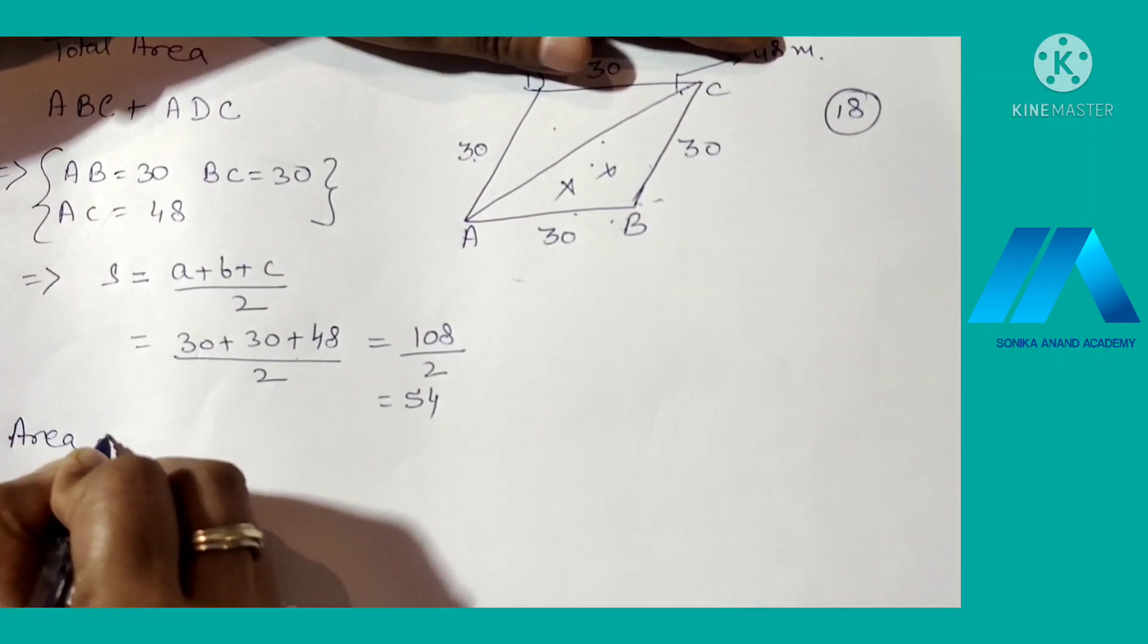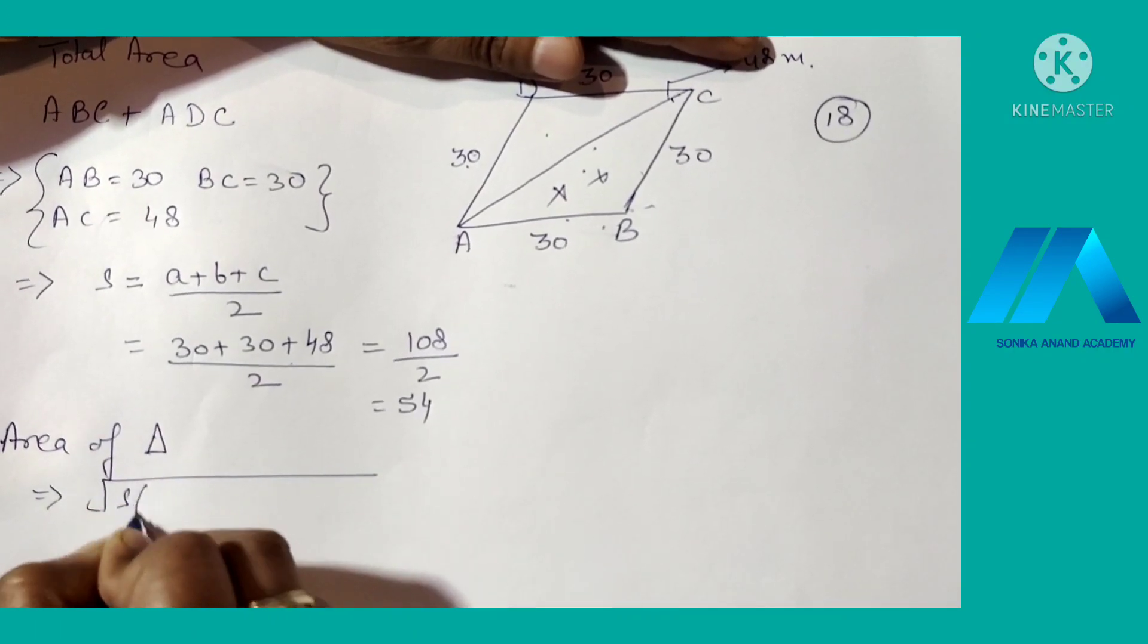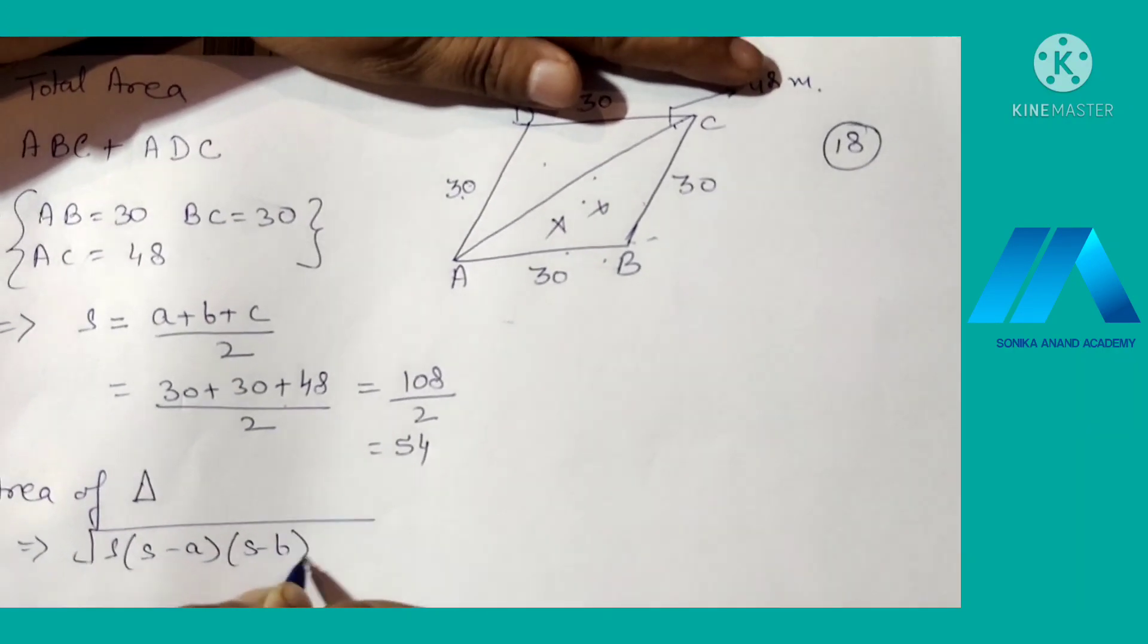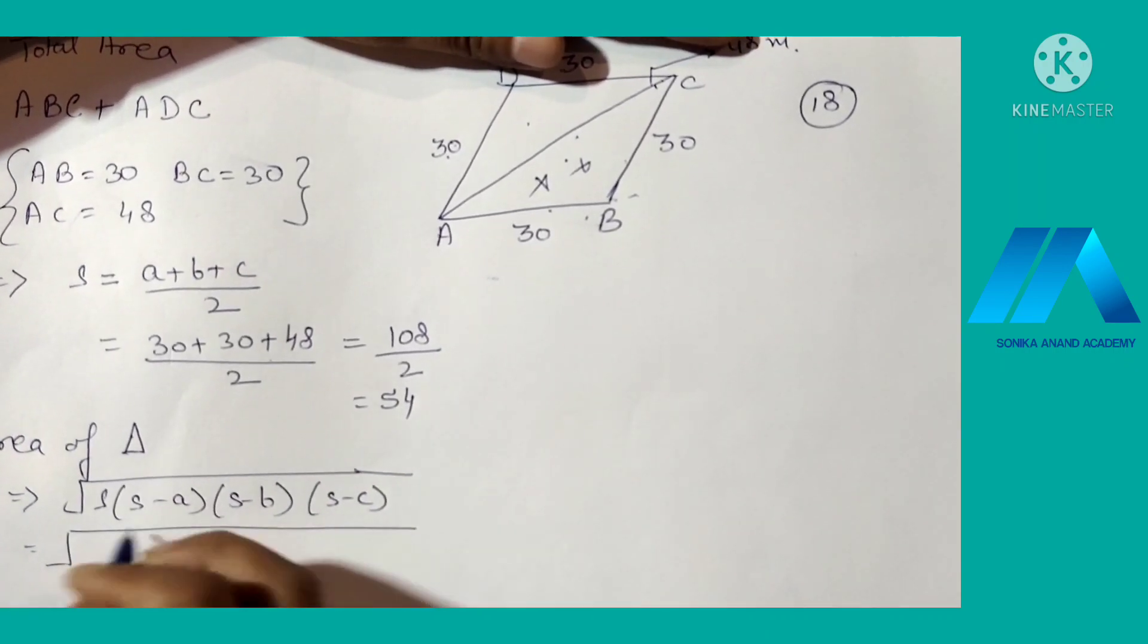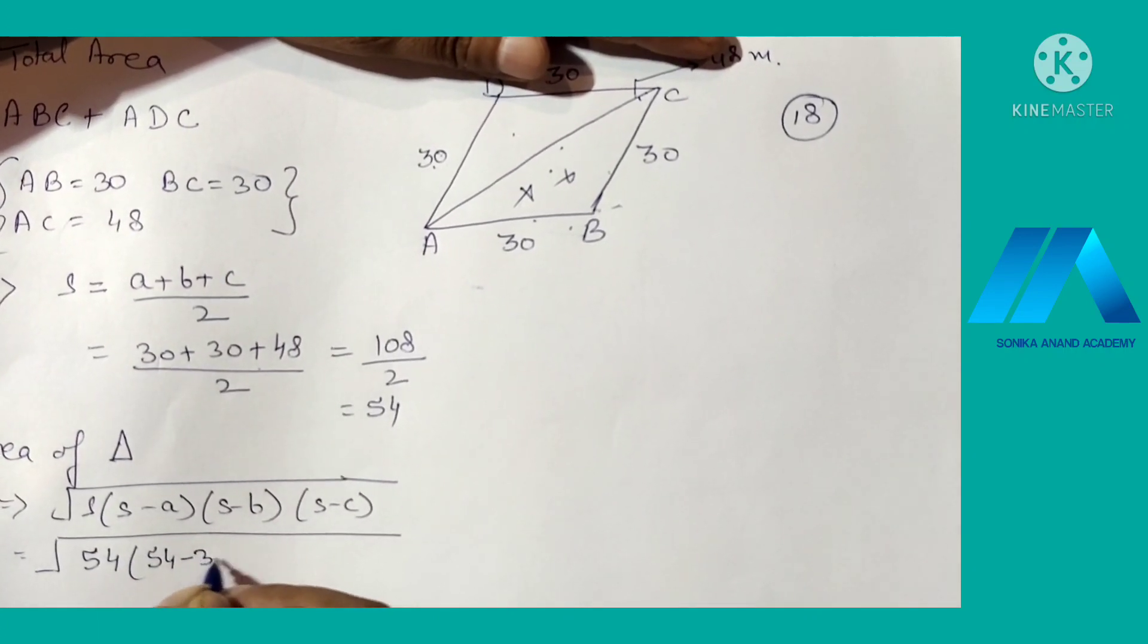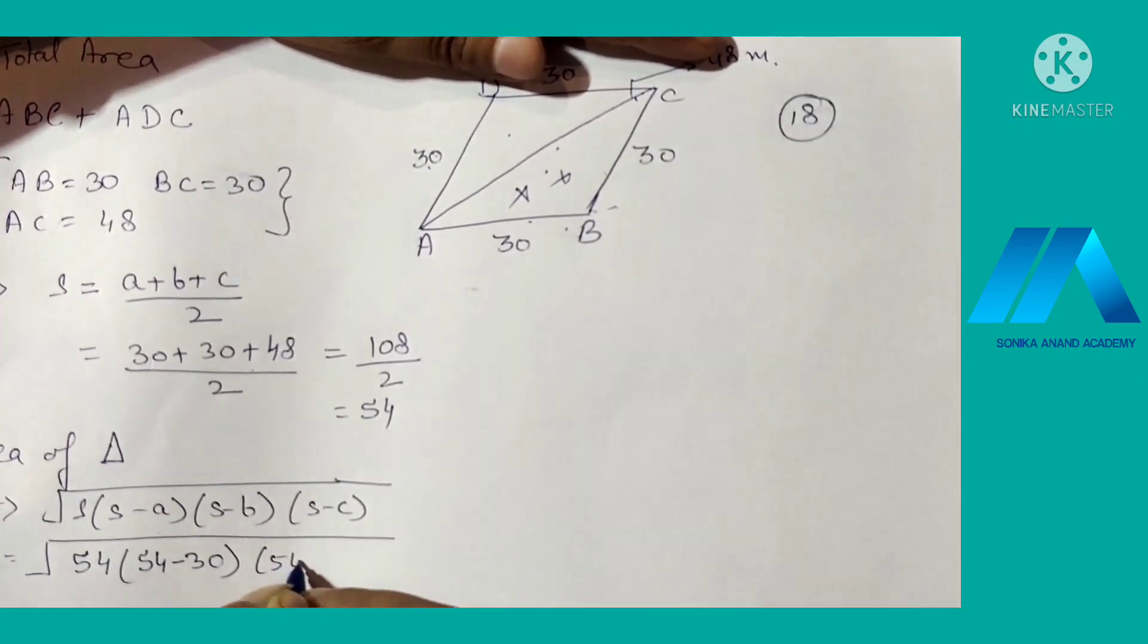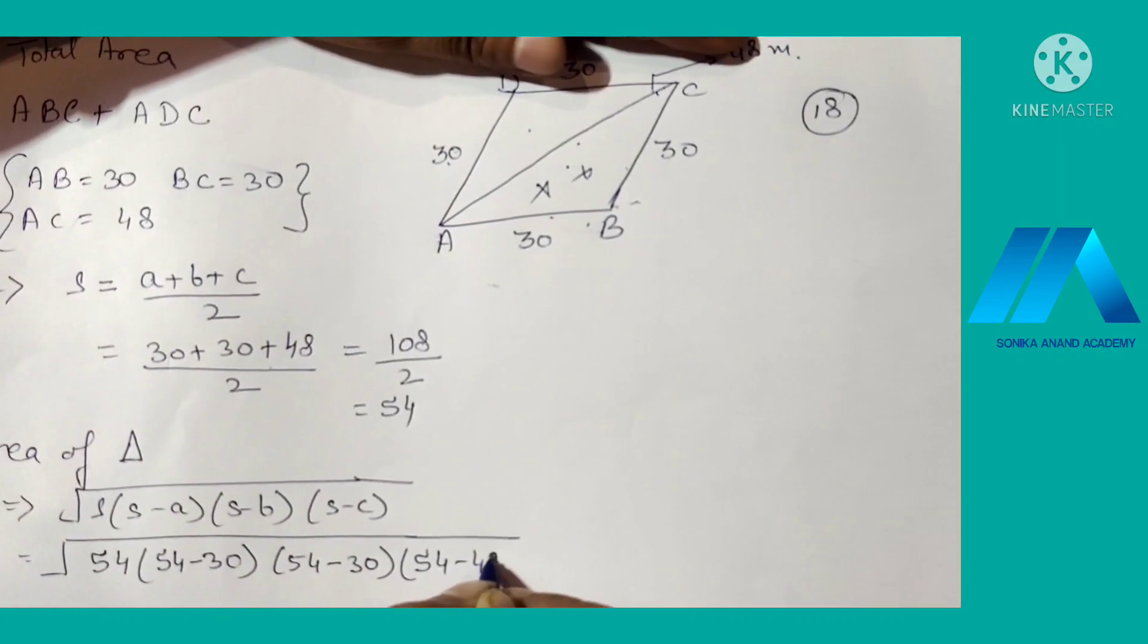Now we have to find the area of the triangle using the formula: under root S times S minus A times S minus B times S minus C. Substituting the values, the semi-perimeter is 54, then 54 minus A, that is 30 centimeters. After that, 54 minus 30, and after that we again put the value 54 minus 48.